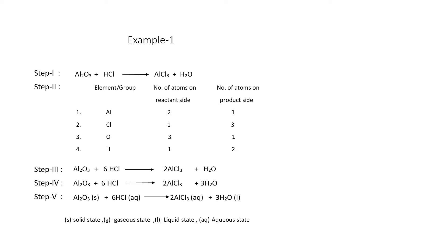In this example, aluminium oxide reacts with HCl to form aluminium chloride and water. On the reactant side: aluminium has 2 atoms, chlorine has 1 atom, oxygen has 3 atoms, and hydrogen has 1 atom. On the product side: oxygen has 1 atom, chlorine has 3 atoms, aluminium has 1 atom, and hydrogen has 2 atoms.